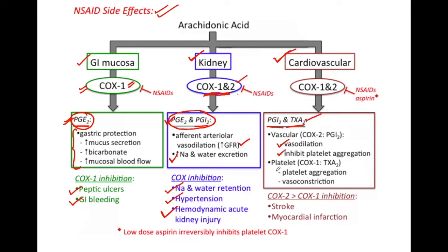Whereas thromboxane A2 causes platelet aggregation and vasoconstriction. Selective COX-2 inhibitors increase the risk of myocardial infarction and stroke. This is because of inhibition of prostacyclins, which cause vasodilation and inhibition of platelet aggregation.